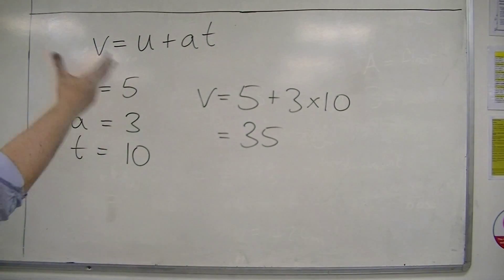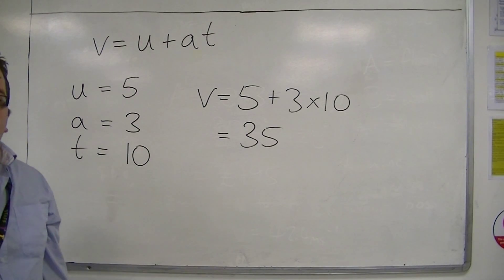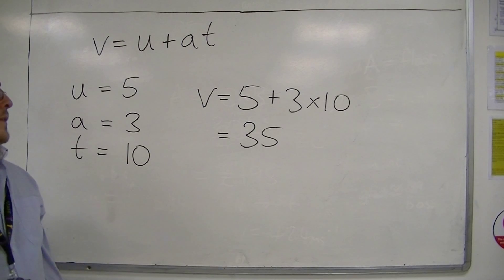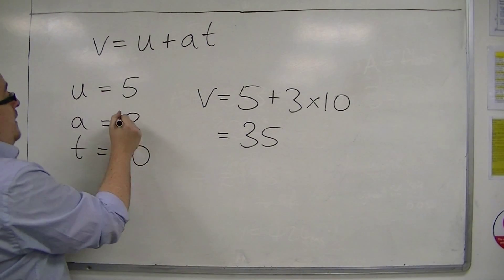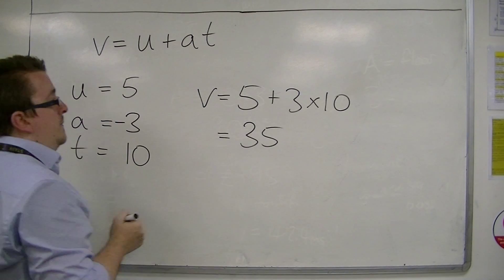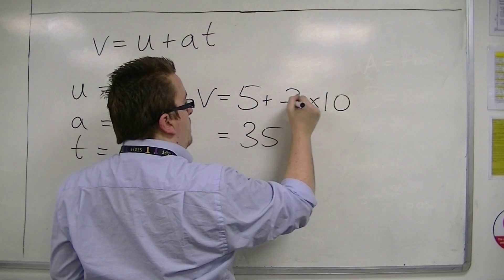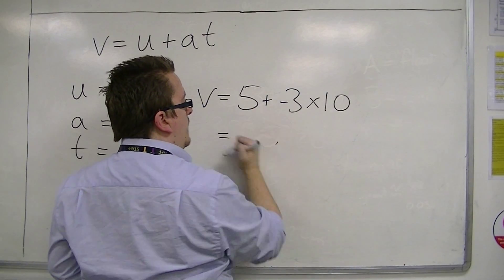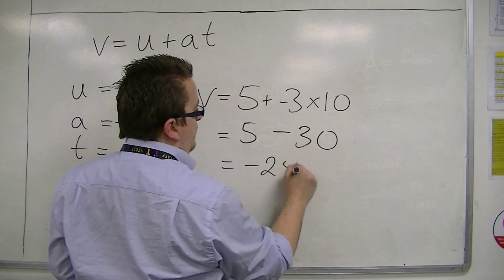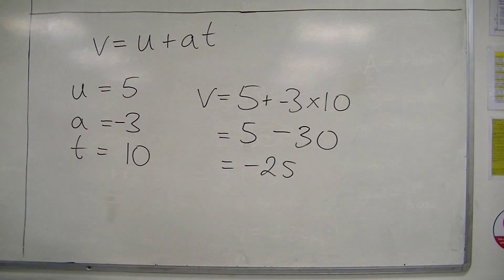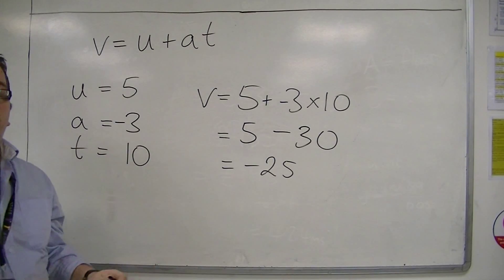The formulas you're going to get aren't going to be too complicated, but just look out for negative signs. Because if you're asked to substitute in a negative value — like if a is now minus 3 — then this would be 5 plus minus 3 times 10, which is 5 take away 30, which is minus 25. So when you put in a negative, make sure you adapt it into your solution.